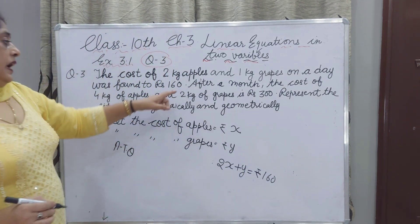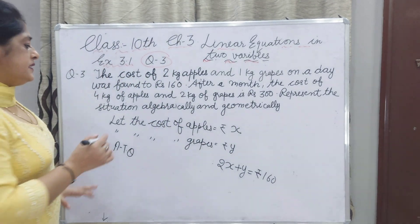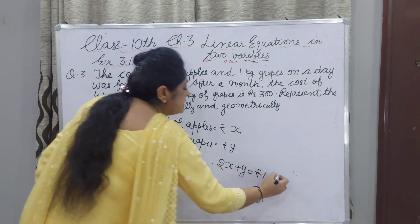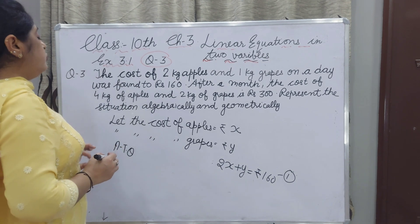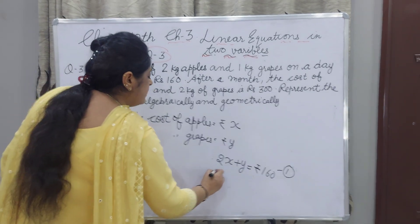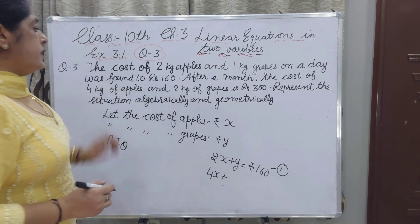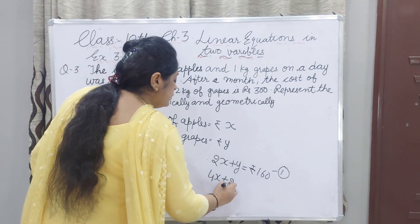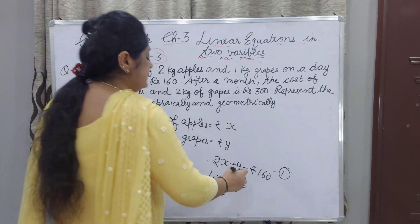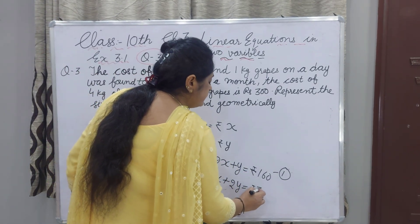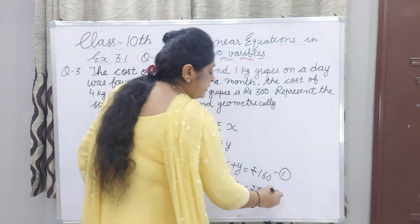That is equation 1. Now, after a month, the cost of 4 kg apples and 2 kg grapes: 4X plus 2Y equals Rs. 300. This is equation number 2.